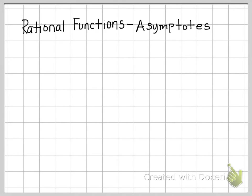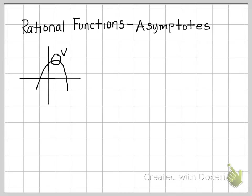This lesson is on rational functions and specifically the asymptotes of rational functions. You're familiar with quite a few different functions — for instance, a quadratic function. When you look at the graph of a quadratic function, the key point is the vertex. For a rational function, it also has key points that we look for.